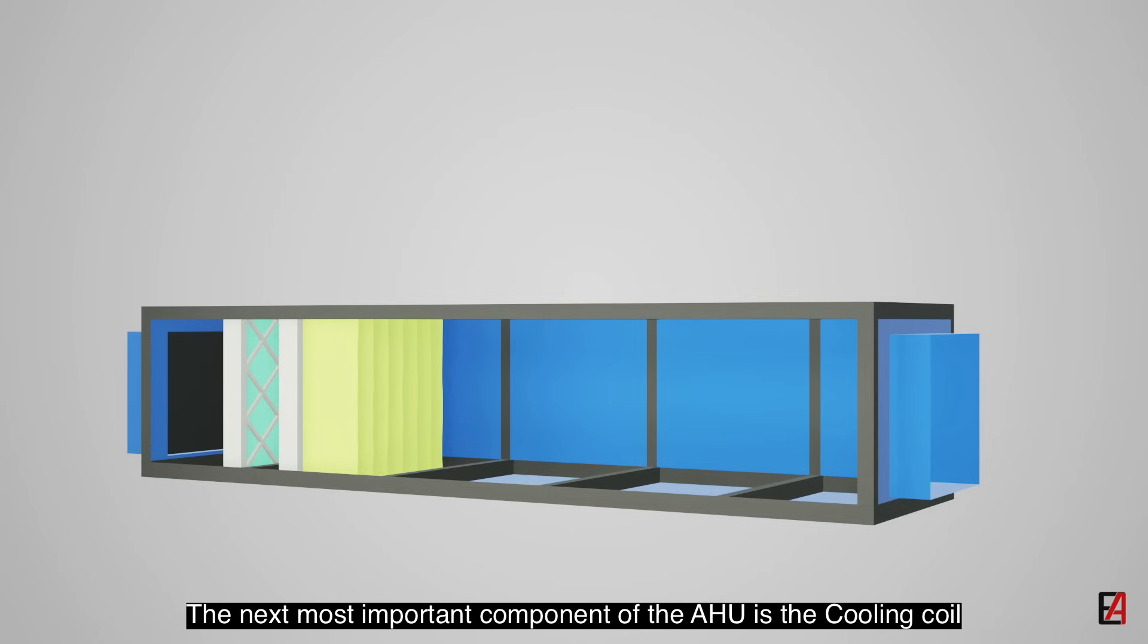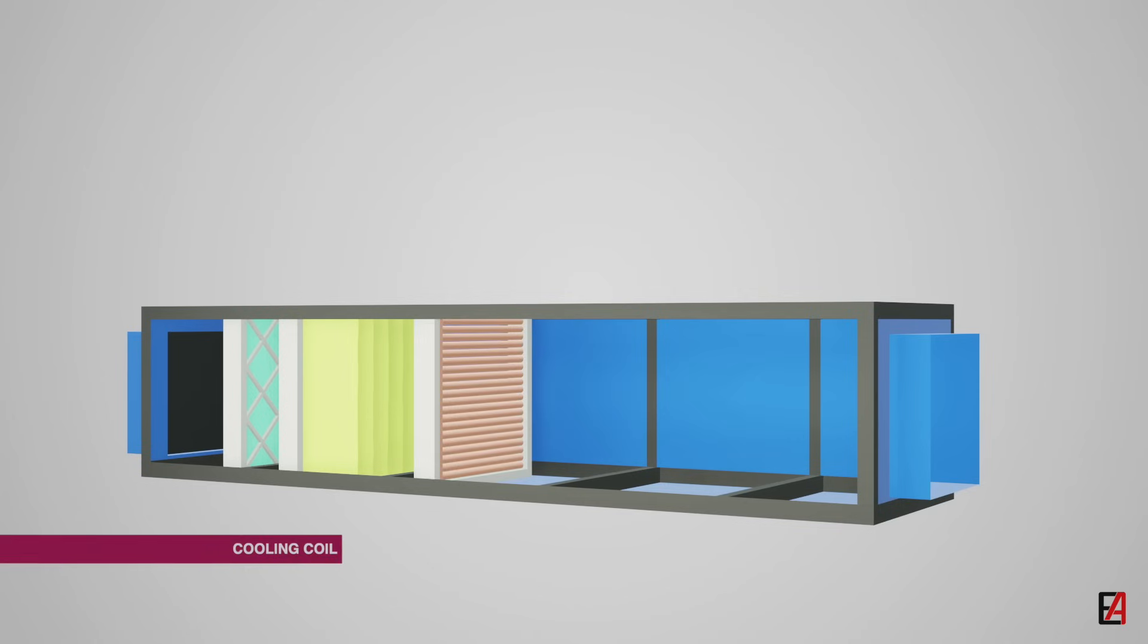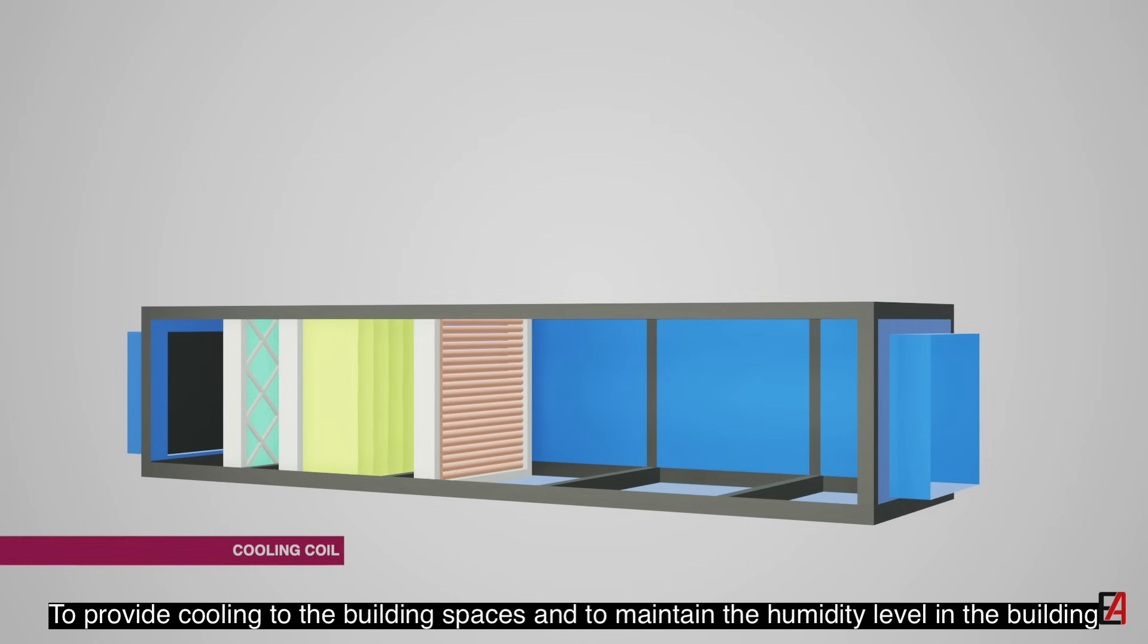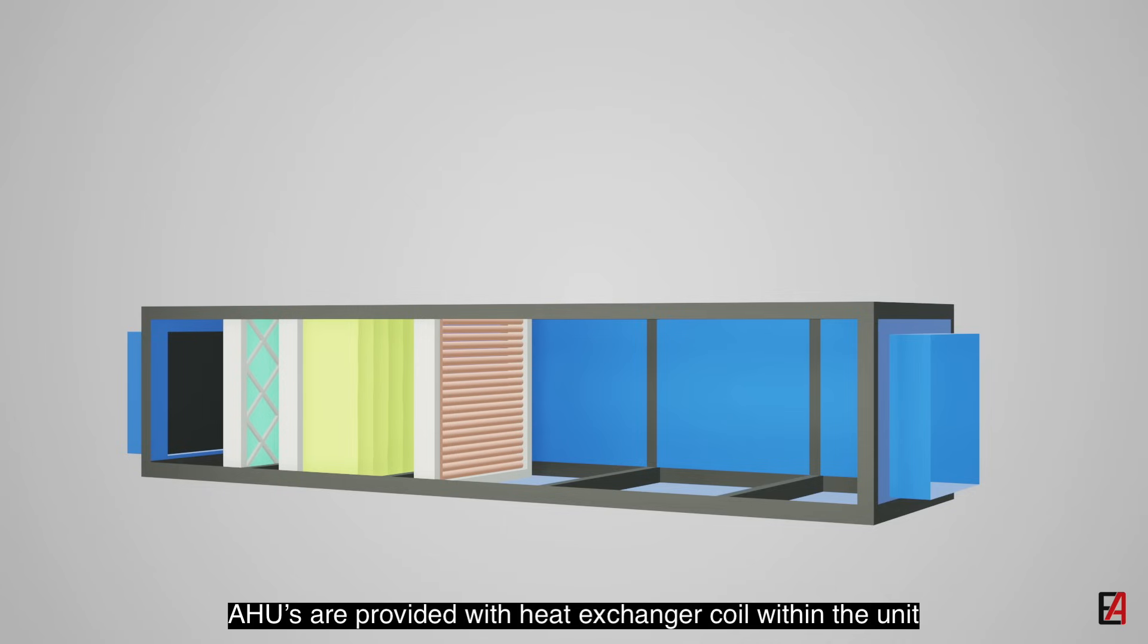The next most important component of the AHU is the cooling coil. To provide cooling to the building spaces and to maintain the humidity level in the building, AHUs are provided with heat exchanger coils within the unit. These coils use chilled water from chillers or refrigerant gas to cool the air.